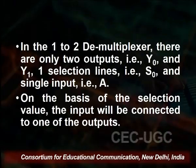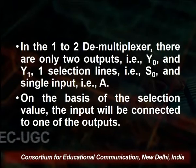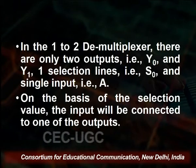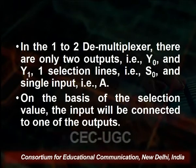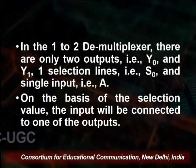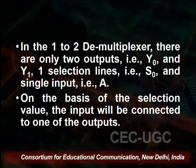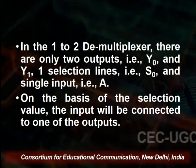Let us take the example of a 1-to-2 demultiplexer, which means 1 input and 2 outputs: Y0 and Y1. There is 1 selection line, using the same formula as the multiplexer circuit. The selection line is S0 and the single input is A. On the basis of the selection values, the input will be connected to one of the outputs.